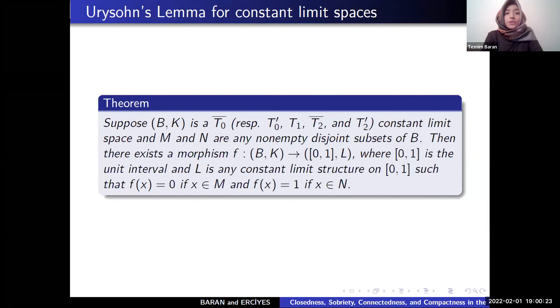Finally, U is the constant limit space and M and N is non-empty disjoint subsets of B. Then there exists a morphism F for [0,1] is the unit interval and L is any constant limit structure on [0,1] such that F(x) is 0 if x in M and F(x) is 1 if x in N.